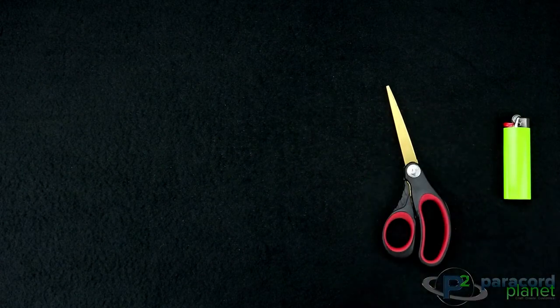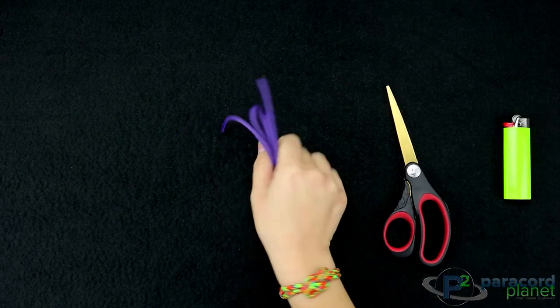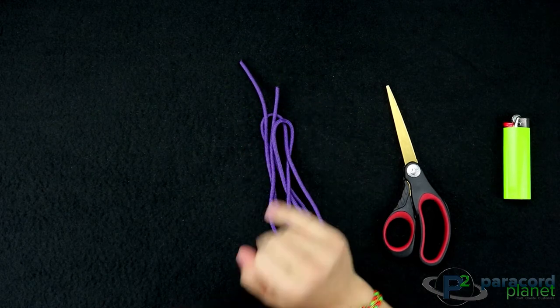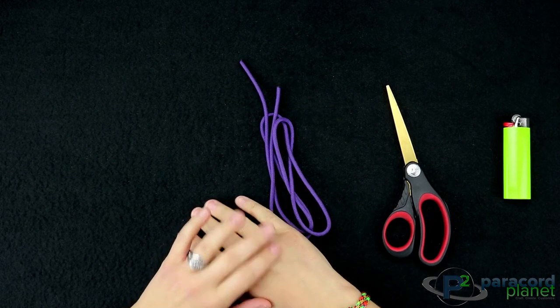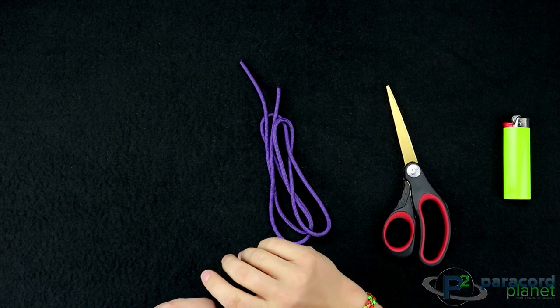For this tutorial you will need scissors and a lighter, and you'll also need paracord. All you really need is about 3 feet and that will easily make a 6 to 7 inch bracelet.